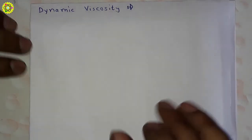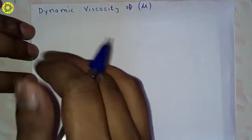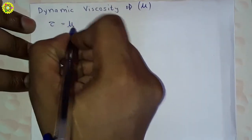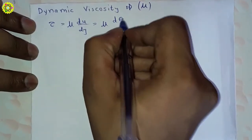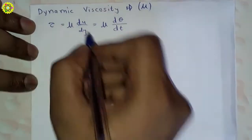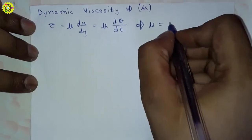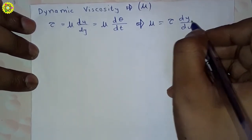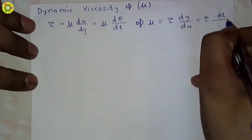Hi friends, welcome. Dynamic viscosity is denoted by mu. Newton's law of viscosity is given by the equation: tau is equal to mu times du upon dy, and it is also given as mu times d-theta upon dt. Here mu is given by the formula: mu is equal to tau times dy upon du, and also as tau times dt upon d-theta.